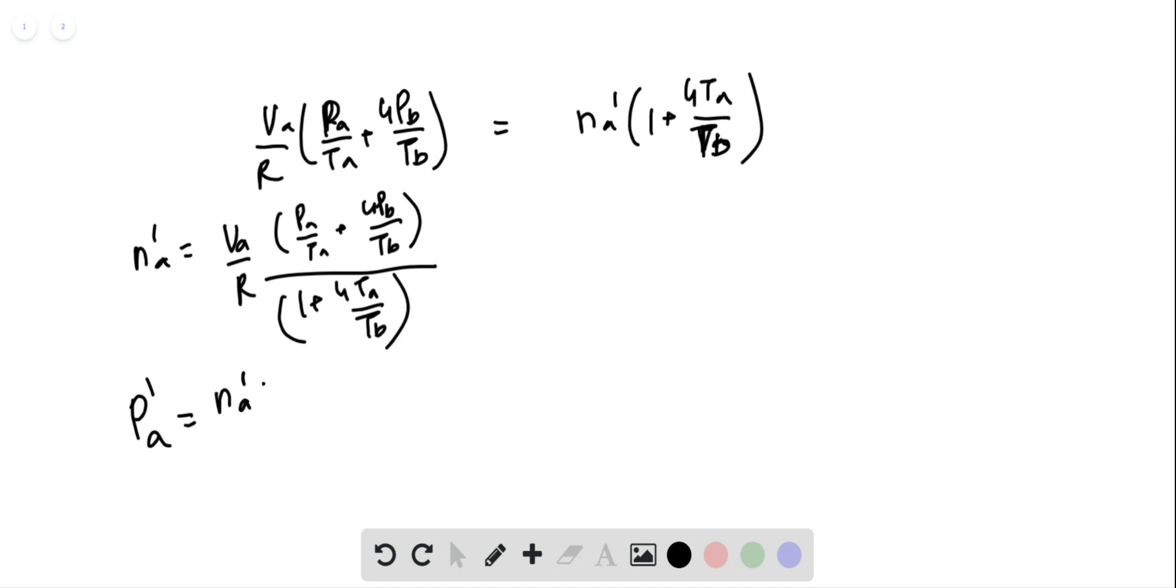PA dash is, if you remember, NA dash R TA by VA. When you substitute here, R TA by VA and when you substitute for NA dash, VA by R.